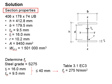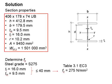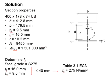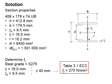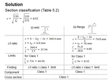Next, determine the section properties by searching the section property table to get all relevant section details. Then determine the yield strength. The steel grade is S275, and the thickness of the flange and web is less than 40 mm. Therefore, according to Table 3.1, the yield strength is 275 N/mm². Substituting Fy into the equation gives epsilon equal to 0.92.